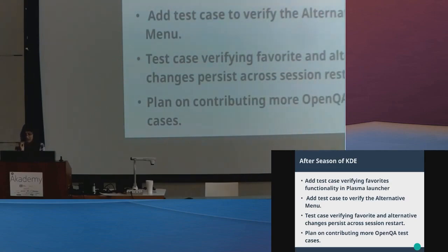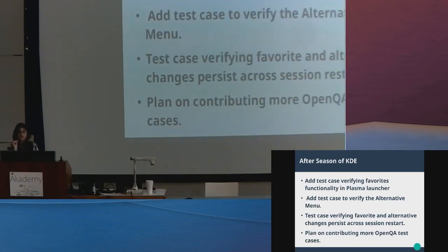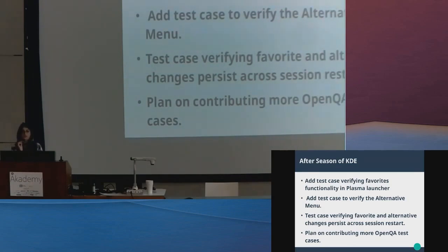The second test case verifies the alternate menu — from the alternate menu dropdown, the test case selects the application menu and switches to it. The third one verifies that wallpaper changes are applied correctly — I test it, verify it doesn't revert, log out, and start a new session. As for the future plan, I plan to contribute more OpenQA test cases.